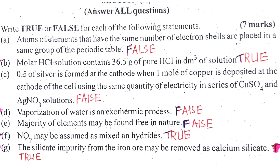Number C: 0.5 mol of copper is formed at the cathode when molar HCl is deposited at the anode of the cell, using the same quantity of electricity in a series of CuSO₄ and AgNO₃ solutions.